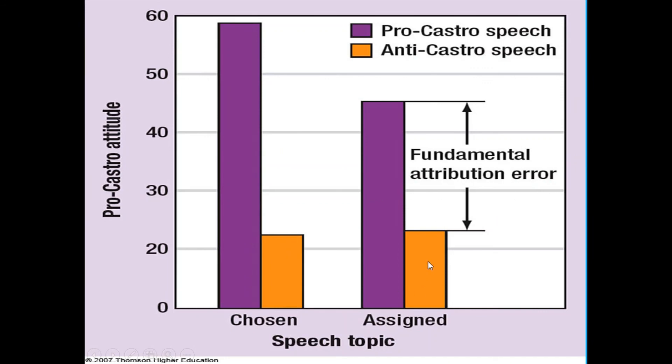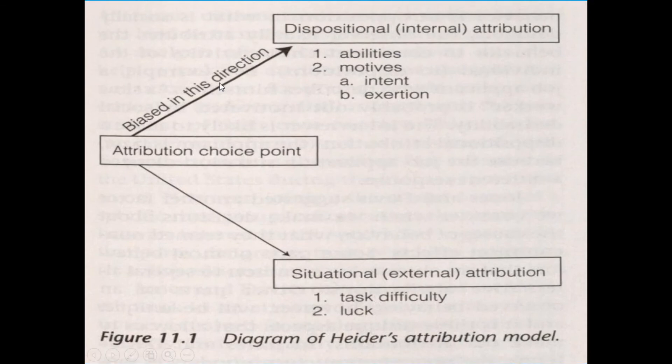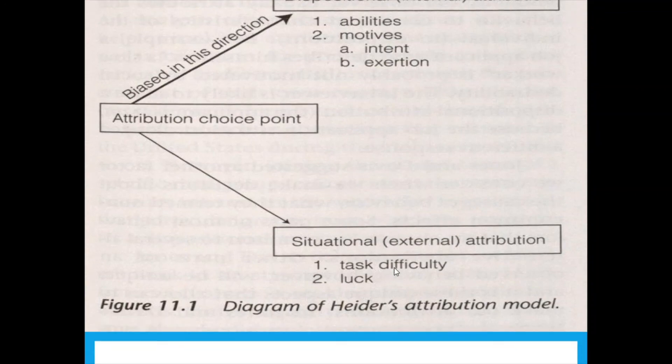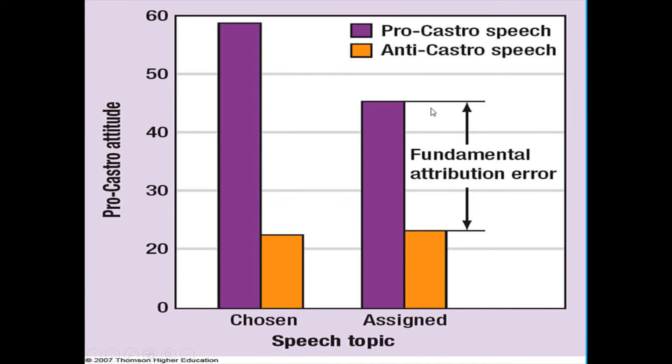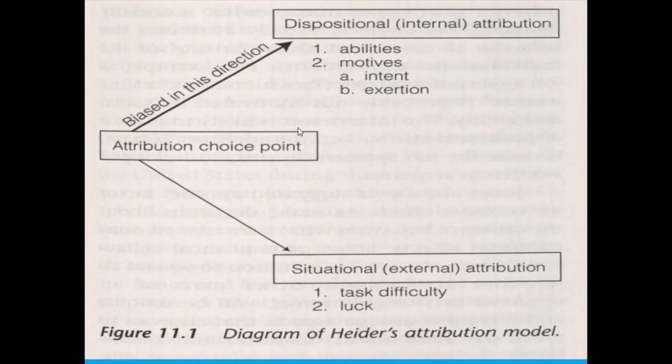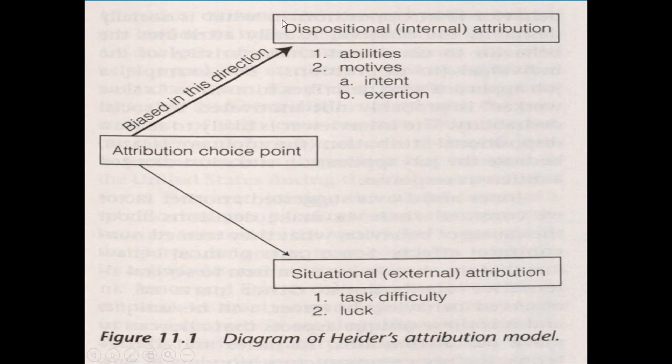What this suggests is that if you are that student who comes in late to class and you want me to form a situational attribution, you don't want me to think that you are unmotivated or irresponsible. And so you tell me, hey, I am late not because I'm irresponsible, but instead because of traffic or the availability of parking. What the Jones and Harris study suggests is that that information may do little to alter this fundamental attribution error. It may do little to alter my bias towards a dispositional internal attribution.